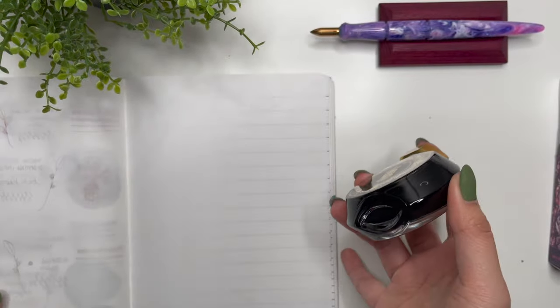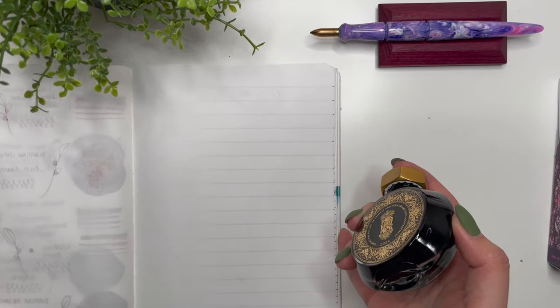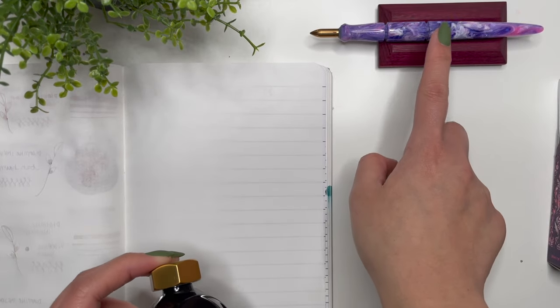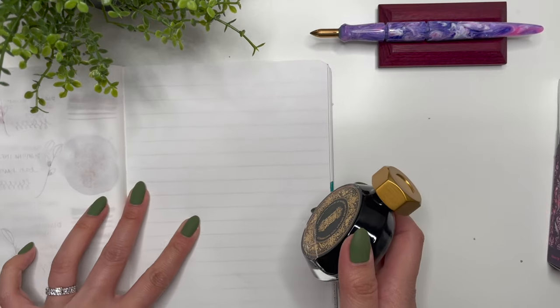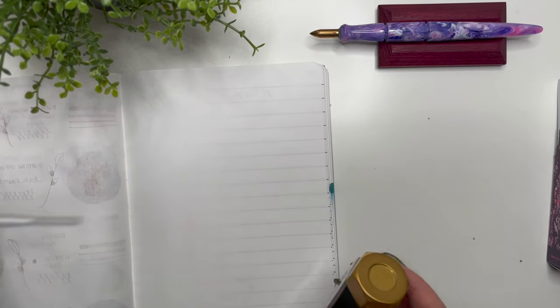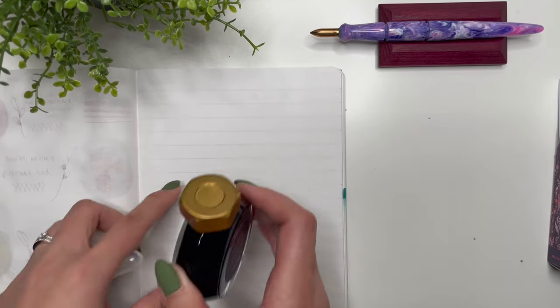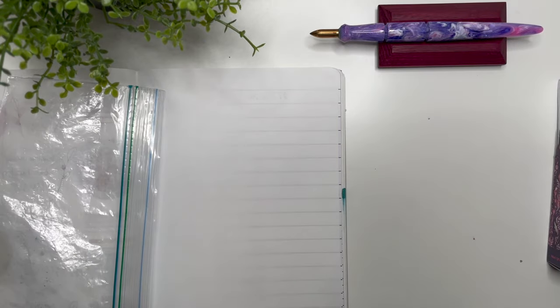Let's agitate that. Here, I'm going to be swatching this in my A5 Galen Leather notebook with 52 gsm Tomoe River paper. I've got my River City Penco nib holder with the Kakimori brass nib, and I am just going to use a plastic pipette here to put this all over the page.